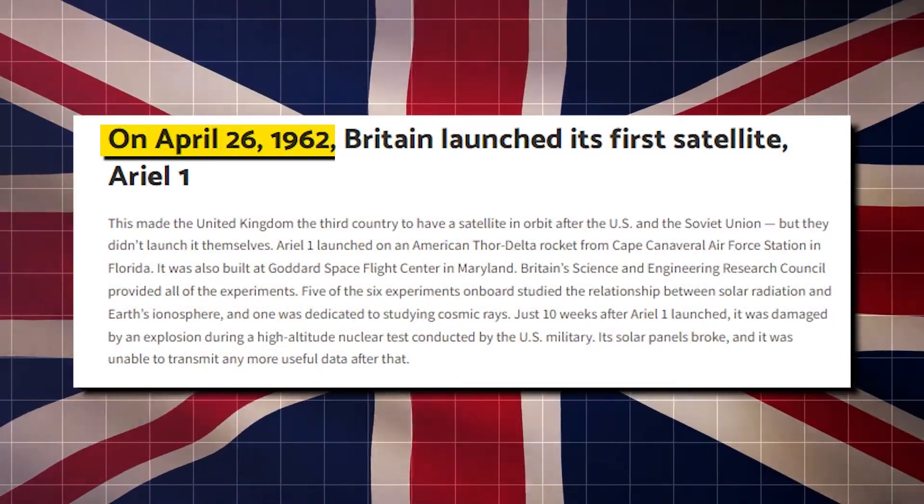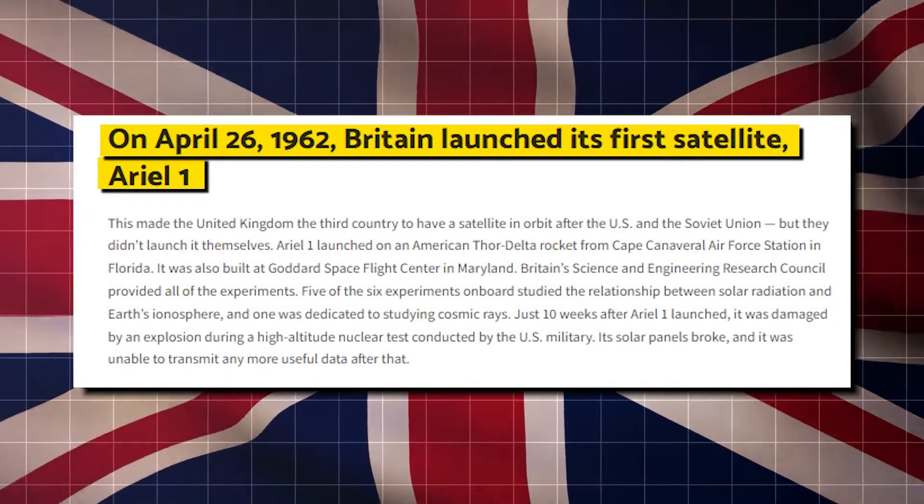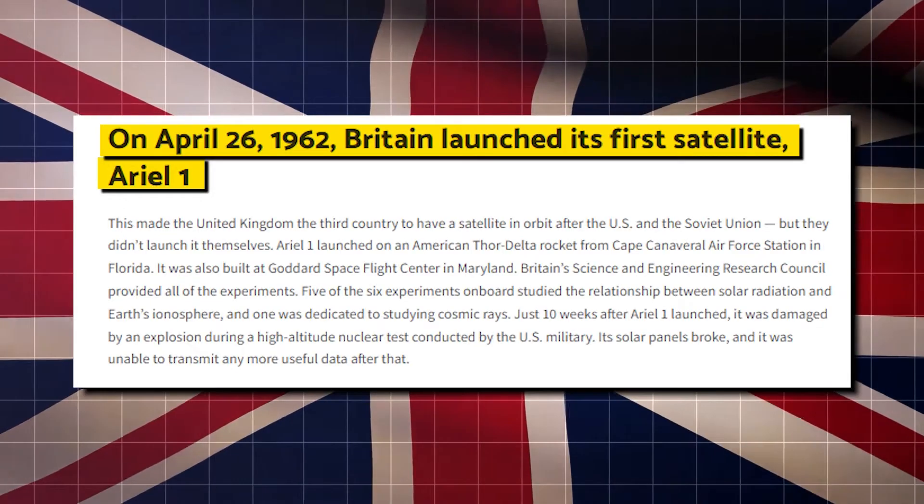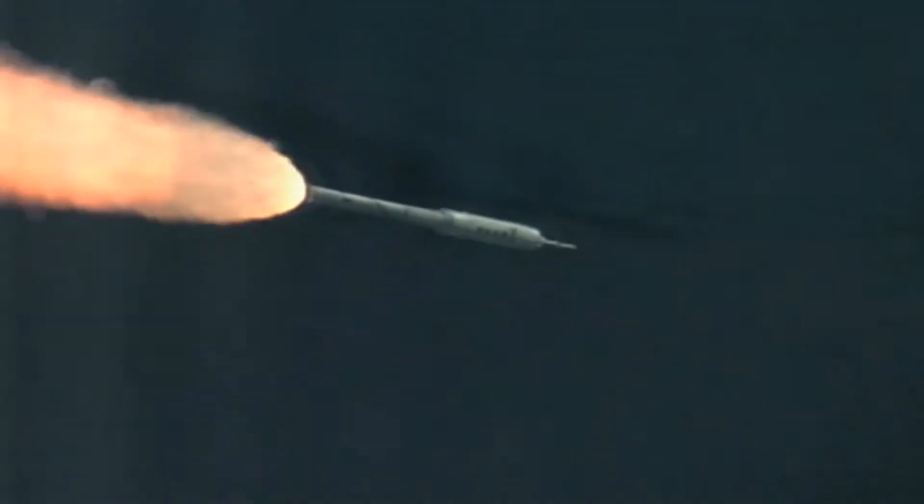Then, in 1962, the United Kingdom proudly sent its first satellite, Ariel 1, into space, only for it to become damaged by a U.S. space nuclear weapons test three months later.